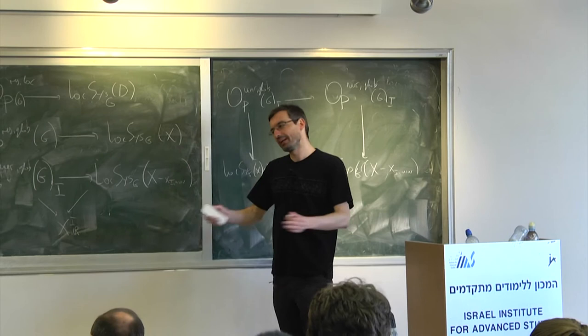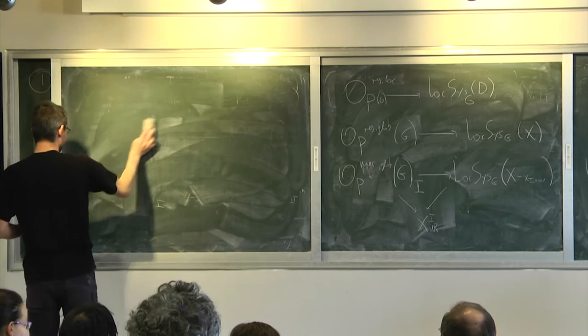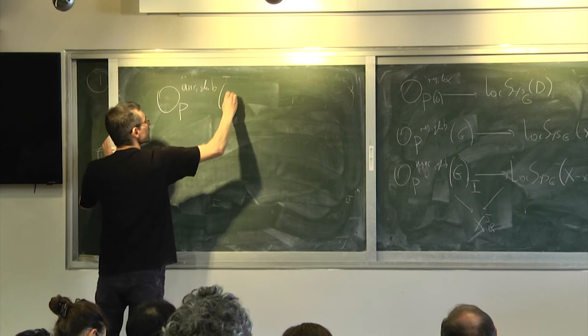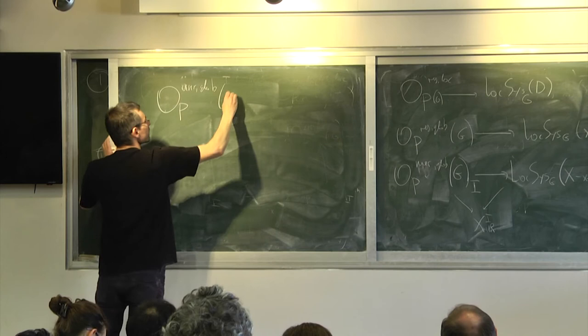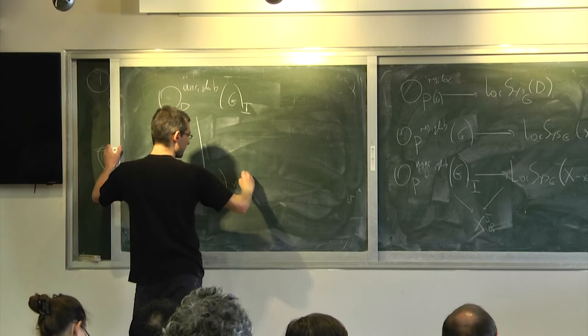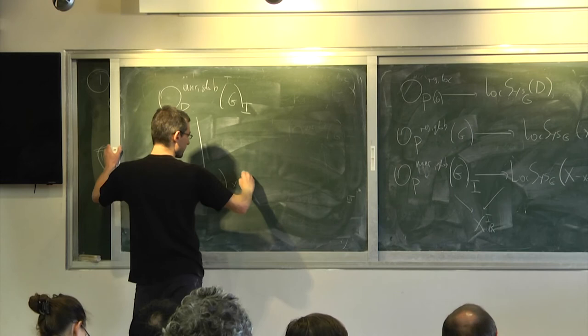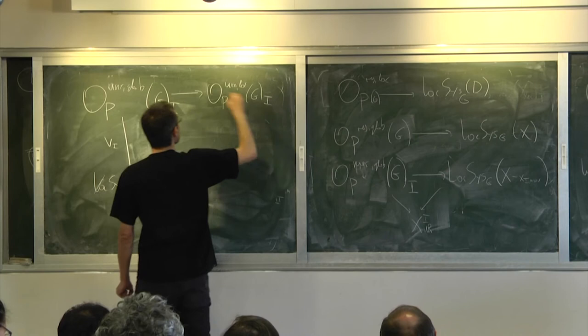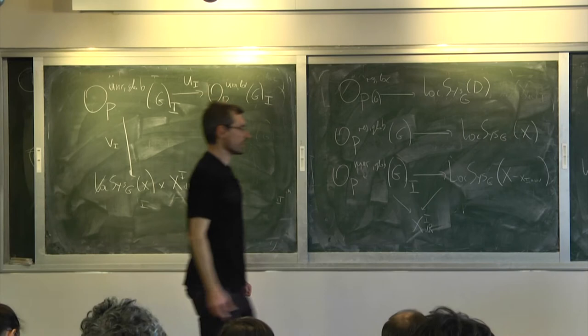Wake up — forget everything, we are ready to define the objects of interest. We have opers unramified global i, and we have two maps of interest. There is a map to global LocSys on my curve times X_i dR — I'll call this map v_i. And there's an evaluation map to local unramified opers — I'll call this u_i. So we're going to use this diagram; this is the geometric input.